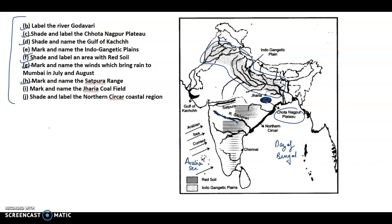Name the Satpura Range — Satpura is here; you know about the Vindhyas and Satpura. Then mark and name the Jharia coalfield — this is Jharia coalfield. Shade and label the Northern Sirkar coastal region — this is the Northern Sirkar region, this region.